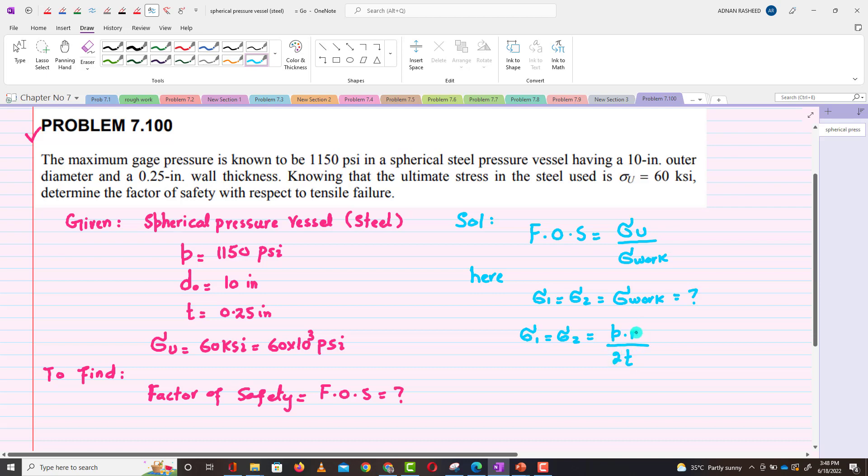r is the internal radius. Internal radius is equal to (1/2) × outer diameter minus thickness of the pressure vessel. So r = (1/2) × outer diameter minus thickness.